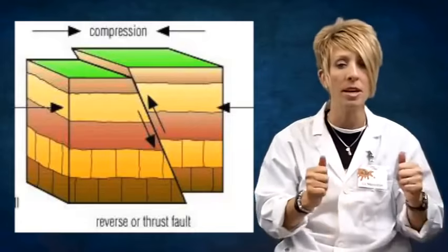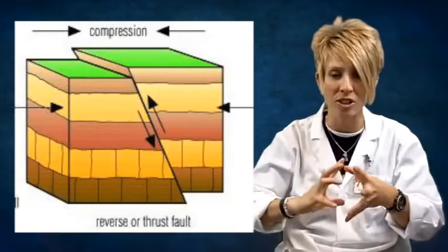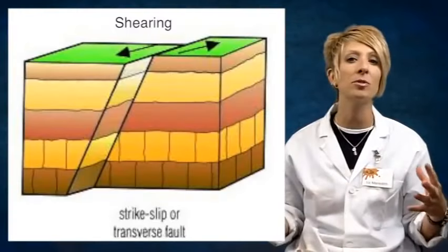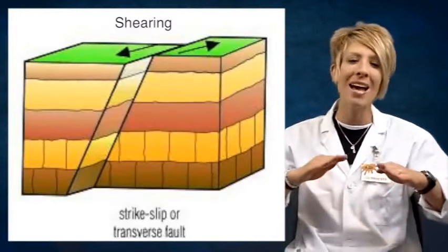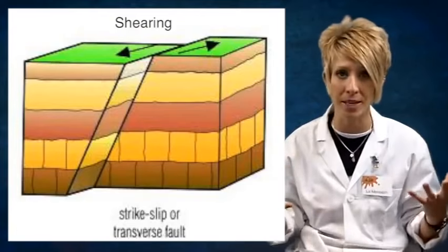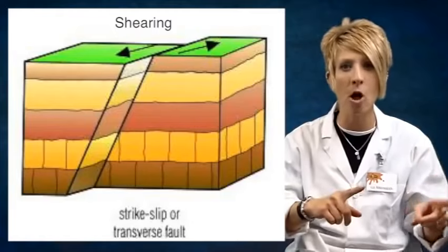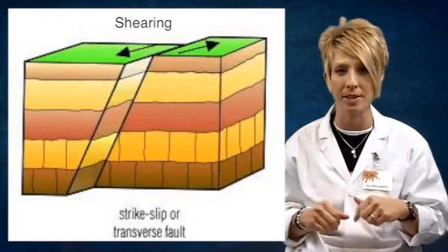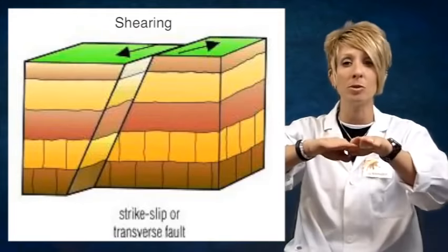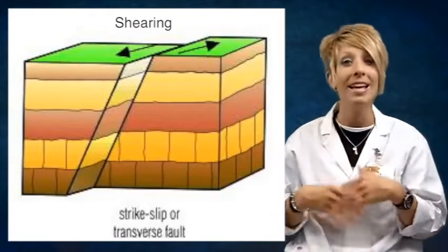The third kind of fault is called a strike-slip fault. This occurs from stress that pushes a mass of rock in two opposite directions. This is called shearing, so remember strike-slip fault is formed from shearing. This occurs at transform plate boundaries, which is where two plates slide past each other.